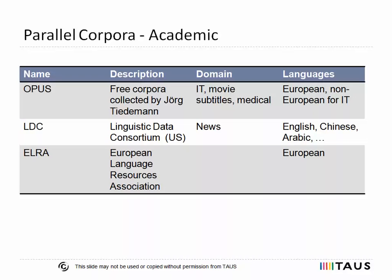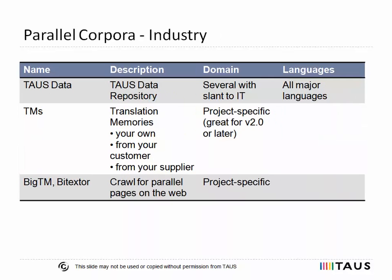The second big group of parallel corpora comes from academia. Some resources are freely available, like the OPUS project repository, initiated and maintained by Jörg Tiedemann from Uppsala University. The Language Data Consortium and ELRA data collections supporting language-related research make available a significant amount of parallel data on a payment or credit basis.